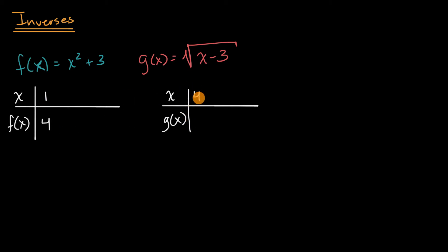Now that wouldn't prove that they're inverses, but if it is an inverse, we should at least be able to get that. So let's see if that's true. So if we take four here, four minus three is one. The principal root of that is one.